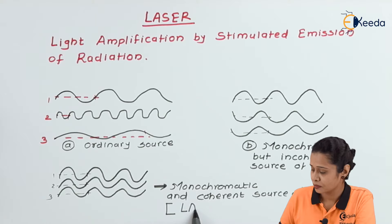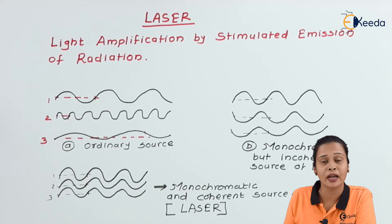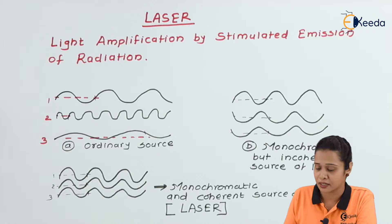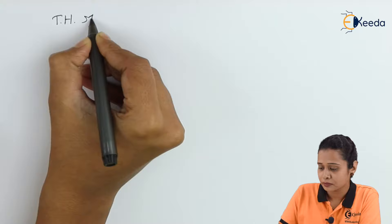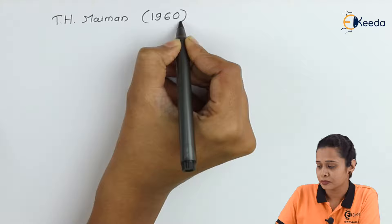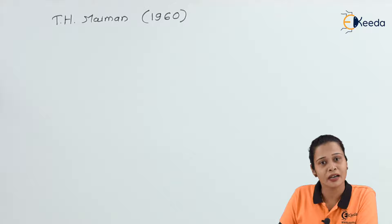An example of a monochromatic and coherent source of light is a laser. Laser is highly monochromatic and highly coherent. The full form of laser is Light Amplification by Stimulated Emission of Radiation. Laser was discovered by T.H. Maiman in 1960, after the discovery of stimulated emission by scientist Einstein.